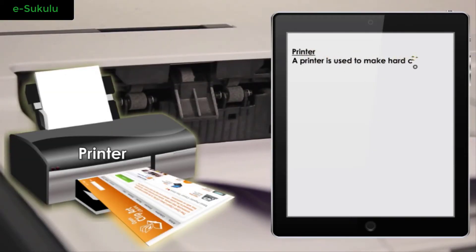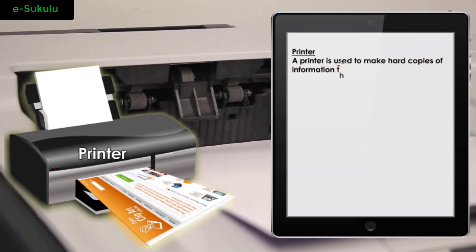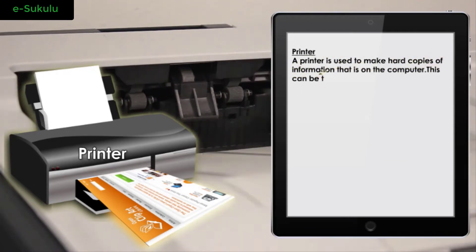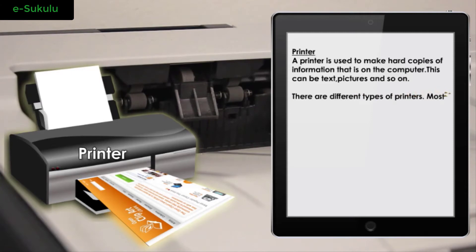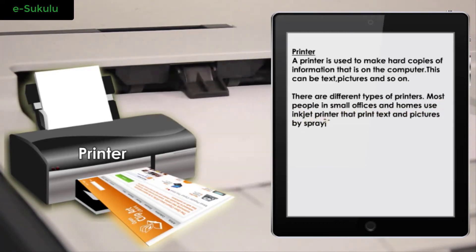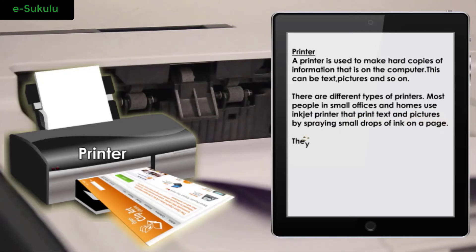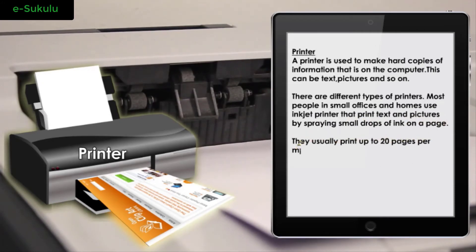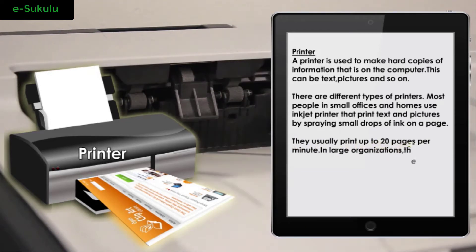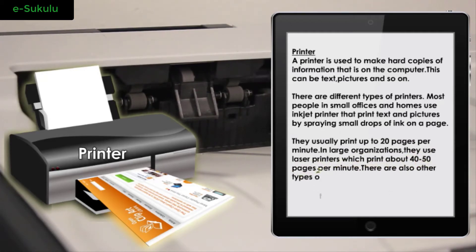A printer is used to make hard copies of information that is on the computer — this can be text, pictures, and so on. There are different types of printers. Most people in small offices and homes use inkjet printers that print text and pictures by spraying small drops of ink on a page; they usually print up to 20 pages per minute. In large organizations, they use laser printers which print about 40 to 50 pages per minute. There are also other types of printers that can scan documents.